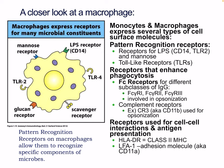Macrophages also have receptors for cell-to-cell interactions and antigen presentation. These include HLA-DR — which is class 2 MHC in human designation — and LFA-1, an adhesion molecule. These are all important in cell communication, contact, and presentation to the adaptive immune system.